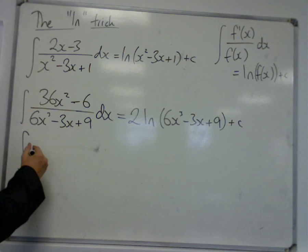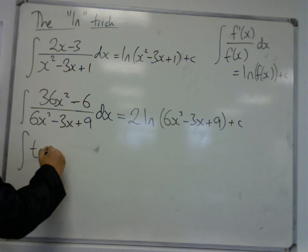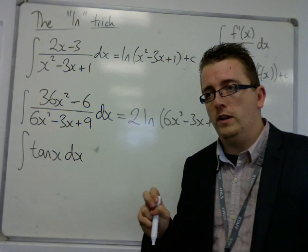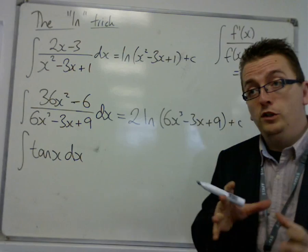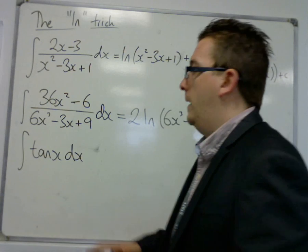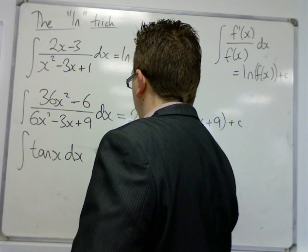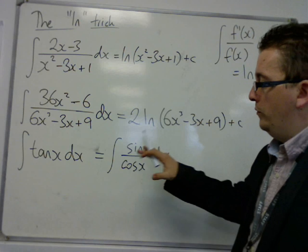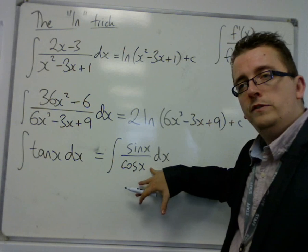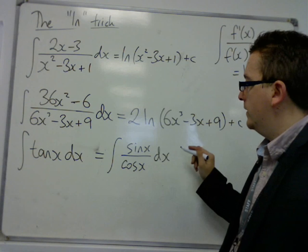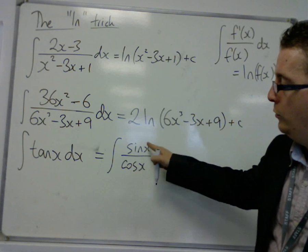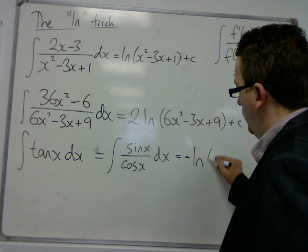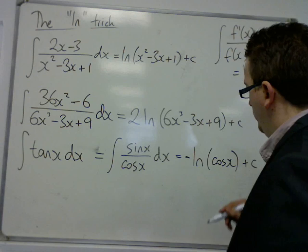Another example would be tan x. This doesn't look like it would use the log trick, but we haven't looked at the integral of tan x yet. Tan, we know, is sine over cos. If we think about what is the derivative of cos x — well, that's minus sine x. We've got sine x on the top, so this would have to be minus log of cos x.